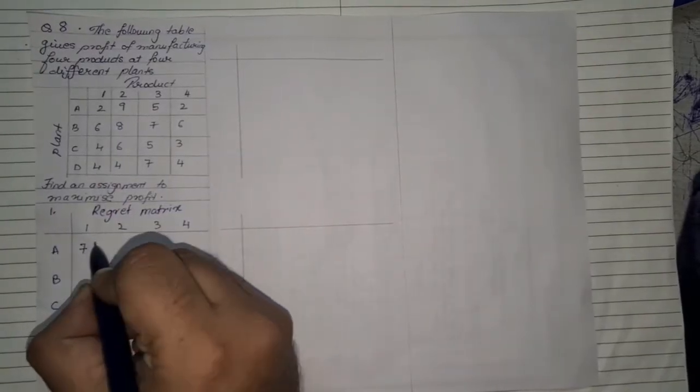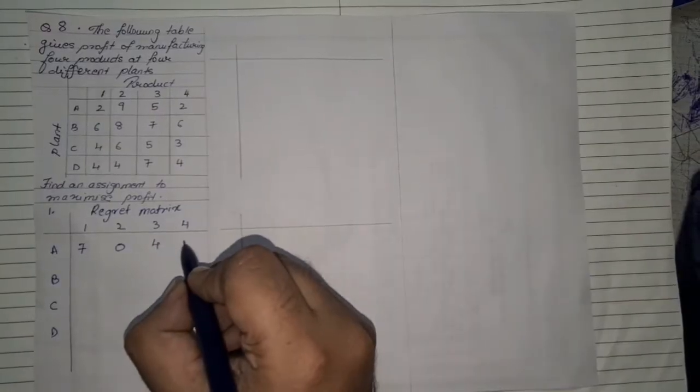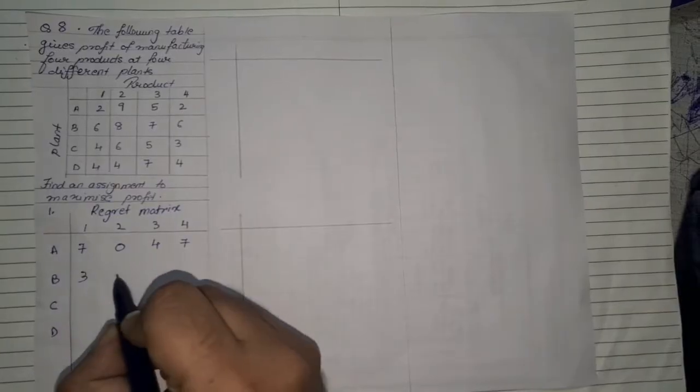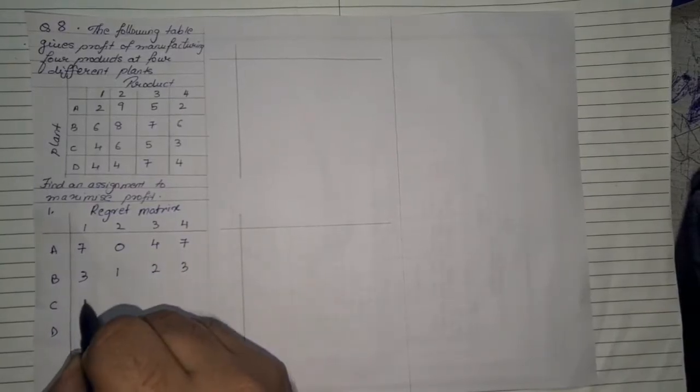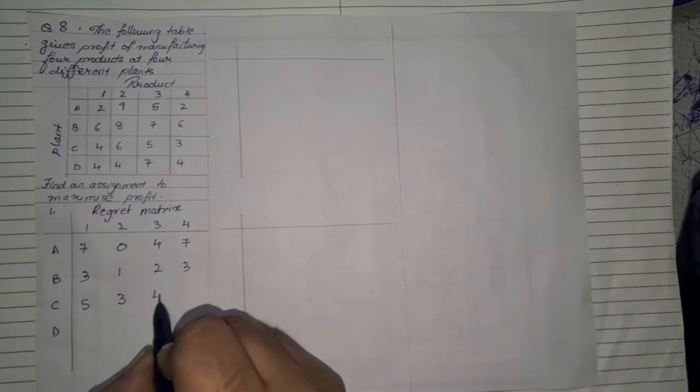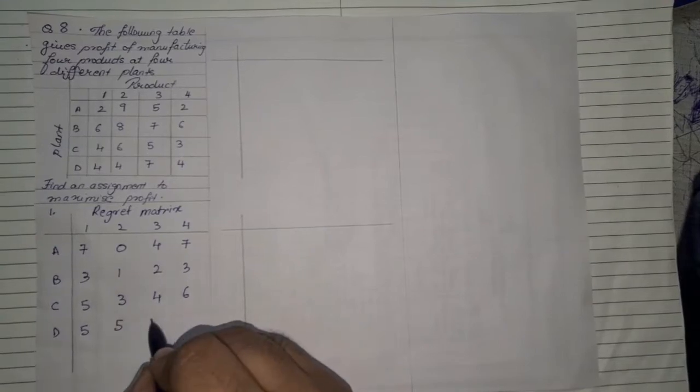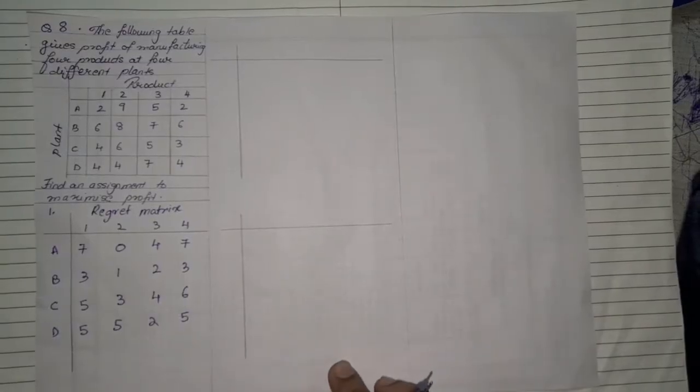So first it will be nine minus two which will be seven. Nine minus nine is zero. Five nine minus five is four. Nine minus two is seven. And then similarly we will have three, one, two, three, five, three, four, six and five, five, two, five. So this is how we create our first regret matrix.